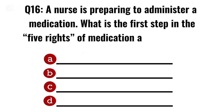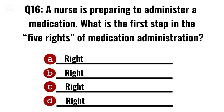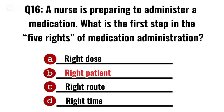Question 16. A nurse is preparing to administer a medication. What is the first step in the five rights of medication administration? Correct option B: Right patient.